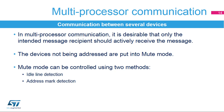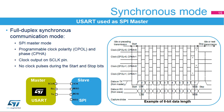To simplify communication between multiple processors, the USART supports a multiprocessor mode. In multiprocessor communication, it is desirable that only the intended message recipient should actively receive the message. The devices not being addressed are put into mute mode. The USART can enter or exit from mute mode using one of two methods: idle line detection or address mark detection.